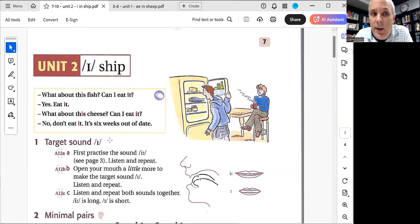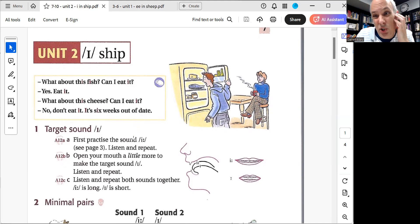So I'm going to do it again really clearly. Do this with me at the exact same time. One, two, three. What about this fish? Can I eat it? Yes, eat it. What about this cheese? Can I eat it? No, don't eat it. It's six weeks out of date. So out of date here means this book is from England. Usually in Canada we would say expired. The date of the cheese is too old, it should probably go in the garbage.